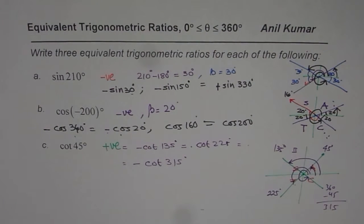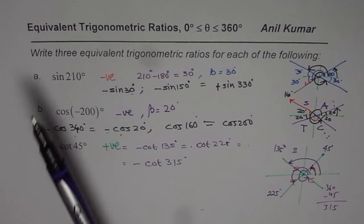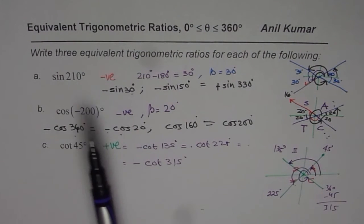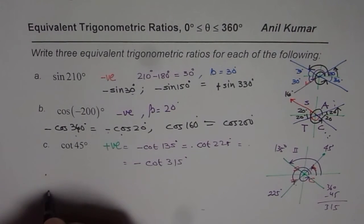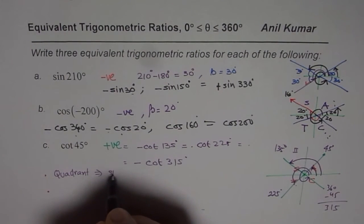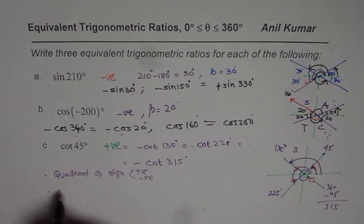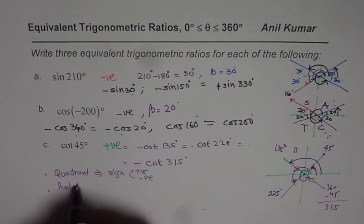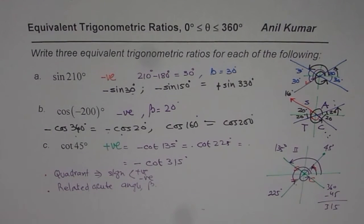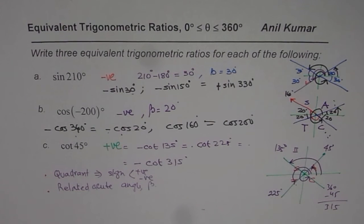I hope with this you understand how to find equivalent trigonometric ratios. The idea is: for any trigonometric ratio, first figure out whether the expected value is positive or negative by finding the quadrant. Second, find the related acute angle beta. Then, with all angles sharing that related acute angle, you get possible solutions. Combine the two pieces of information — sign and related acute angle — to get the right answers. Thank you and all the best.